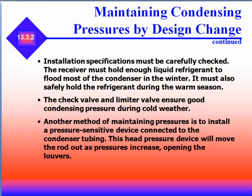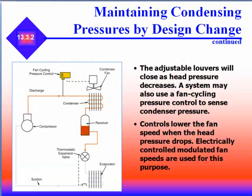Another method of maintaining pressure is to install a pressure-sensitive device connected to the condenser tubing. This head pressure device moves a rod out as pressure increases, opening the louvers. The adjustable louvers close as pressure decreases. A system may also use a fan cycling pressure control to sense condenser pressure, lowering fan speed when head pressure drops. Electronically controlled modulated fan speeds are also used for this purpose.